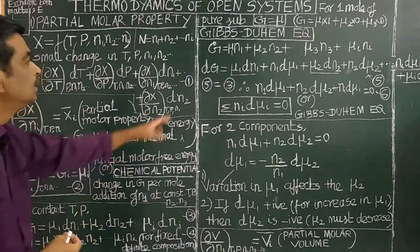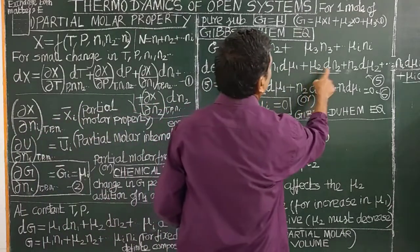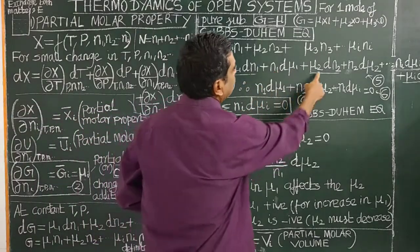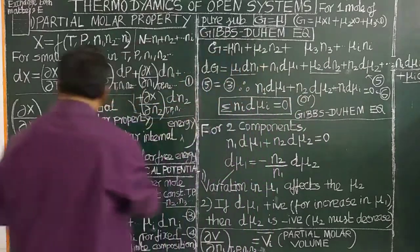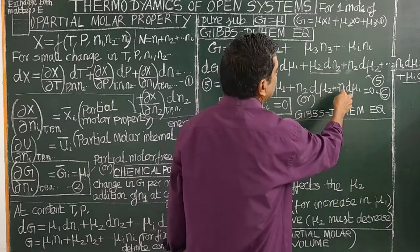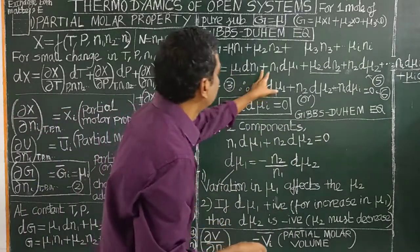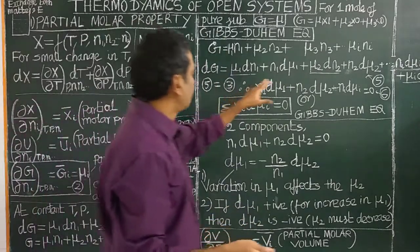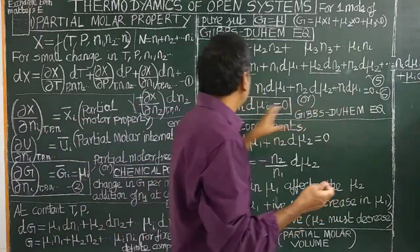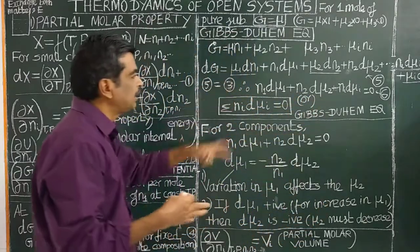Comparing the two expressions for dG, the μ1 dN1 and μ2 dN2 terms cancel out, leaving: N1 dμ1 + N2 dμ2 = 0. This equation is called the Gibbs-Duhem equation, which can be written in general as: Σ Ni dμi = 0.